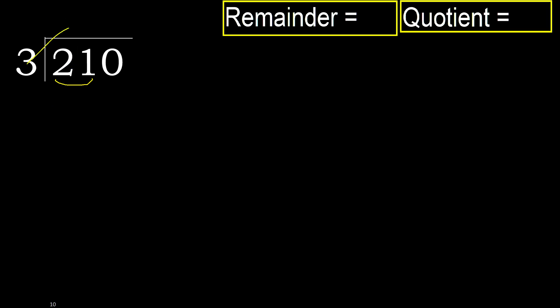3 multiplied by which number is nearest to 21 but not greater? 3 multiplied by 8 is 24 — 24 is greater. 3 multiplied by 7 is 21 — 21 is not greater.